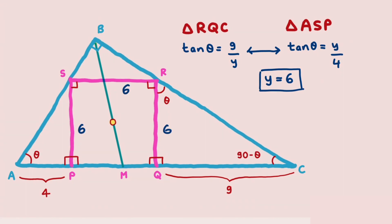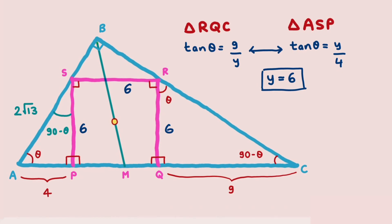With Y replaced by 6, we look at triangle ASP — a right angle triangle with height 6 and base 4. Applying the Pythagorean theorem, the hypotenuse AS = 2√13. Applying the angle sum property in triangle ASP gives angle S = 90 - theta. At point S we have a straight line: one angle is 90 - theta and another is 90 degrees, so by simplification, angle BSR = theta.